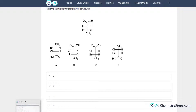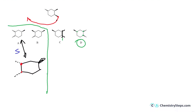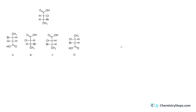Now we have some Fischer projections. Fischer projections are a great tool for representing compounds with a lot of stereogenic centers, and in particular they make it easier to notice the configuration of carbohydrates, which are compounds with a lot of stereogenic centers. That's where Fischer projections are used perhaps the most often.